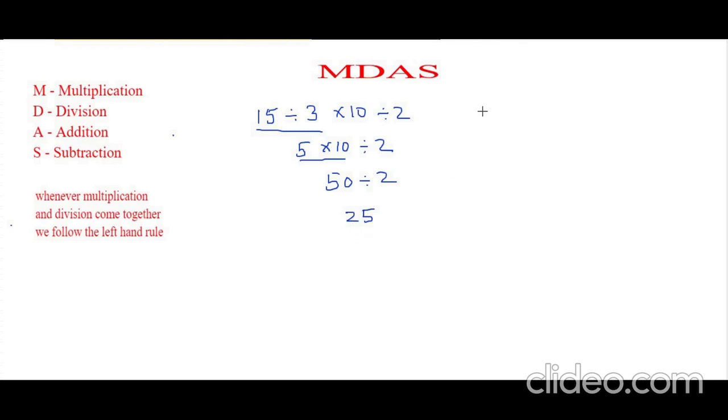Now let's learn with another small example: 3 times 30 divided by 10. Here also the multiplication and division are together.